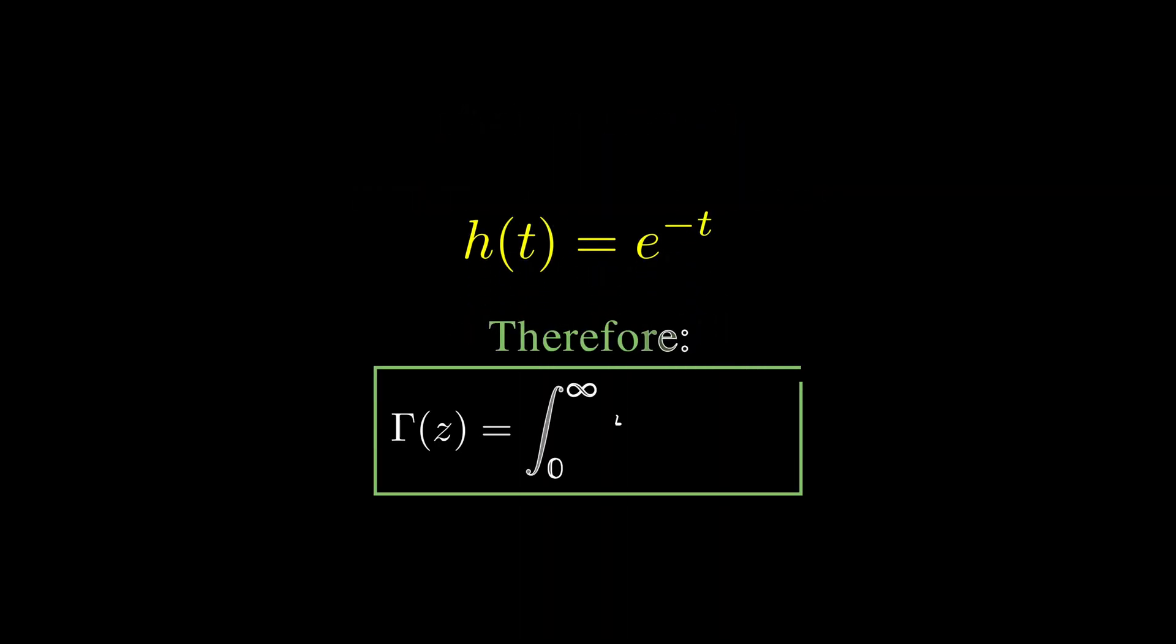So we arrive at the gamma function, where gamma of z equals the integral from 0 to infinity of t to the power z minus 1 times e to the negative t dt.